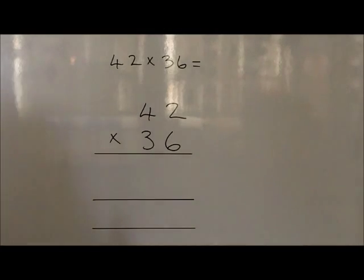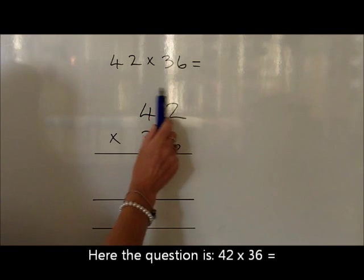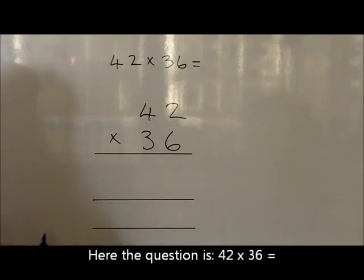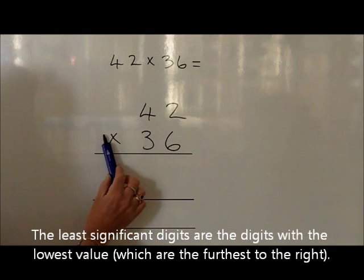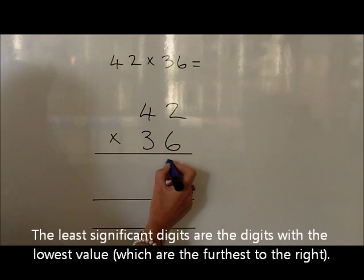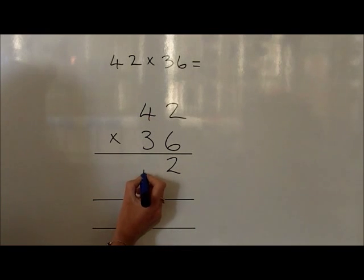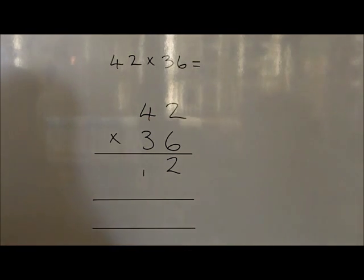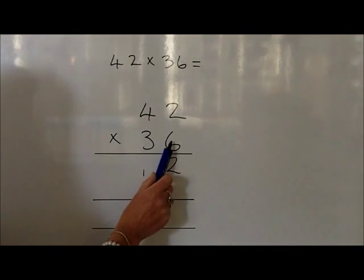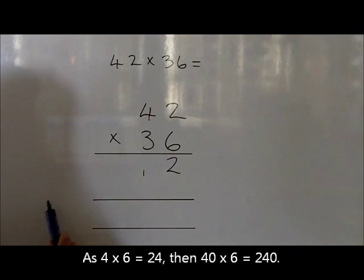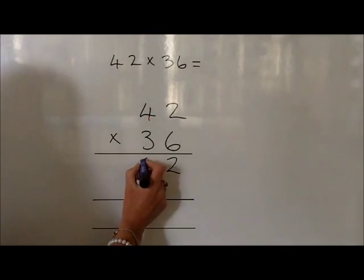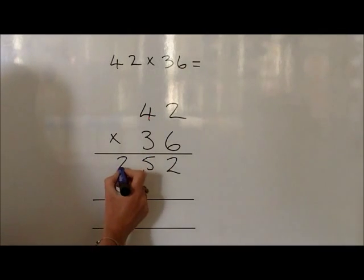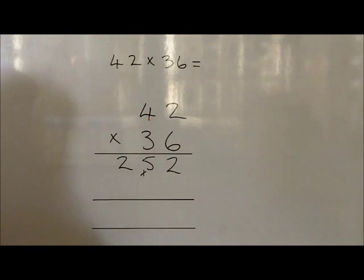With the question 42 times by 36, we write the 42 on the top row and then multiply it all by 36. We start off working on the least significant digits. So we do 2 times 6, which is 12, which we write as a 2 in the units, then carry 1 for the 10 into the tens column. We now look at 40 times 6 — knowing that 4 6s are 24, so 40 times 6 is 240, plus the 10 carried is 250, which we write as a 5 in the tens and a 2 in the hundreds, crossing out the 1 ten carried.